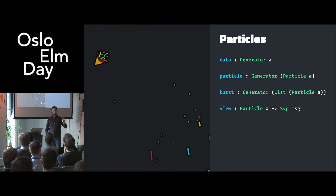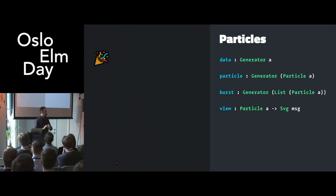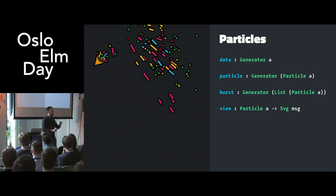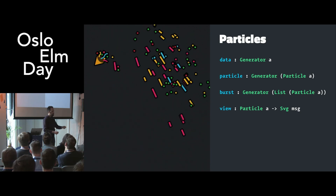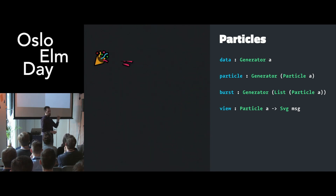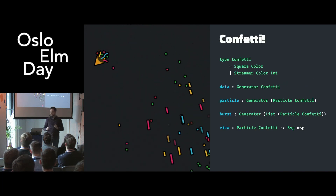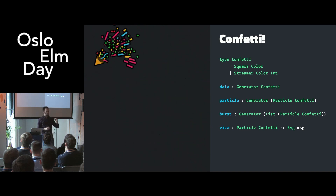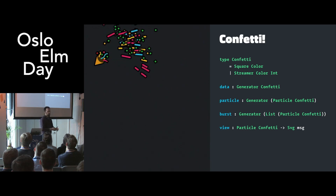We have four basic functions when doing something like a burst. First, we have data, which is generating some data — we'll fill in that type hole later. In this case that's the confetti particles. Then we have a particle generator that wraps that data in the stuff you need to do the physical simulation. Then we have a burst, because we don't just have one — we have a list of them. And finally we have a view, which takes a single particle and turns that into some SVG. The concrete types here: confetti has squares and streamers. The little ones have a color; the big ones also have a color but also a length. We generate that randomly to get a generator of confetti, a generator of particles of confetti, a generator of list of particles of confetti. Finally we get a particle confetti to an SVG message.